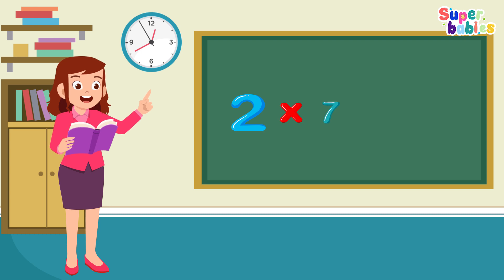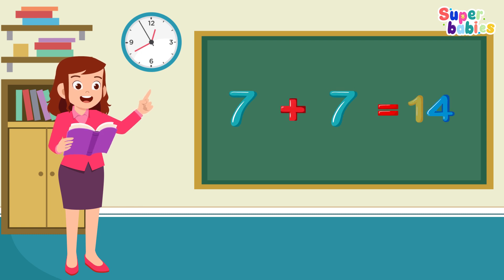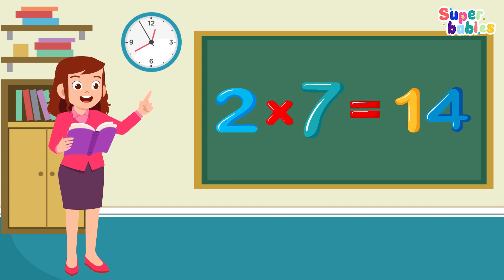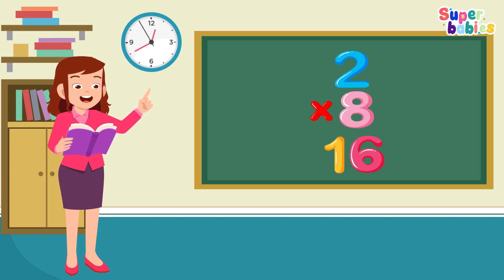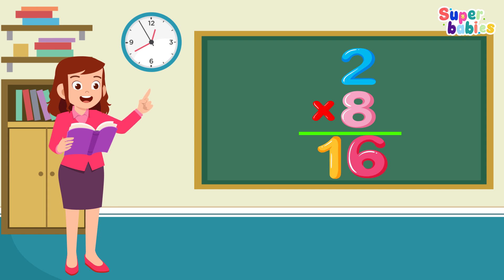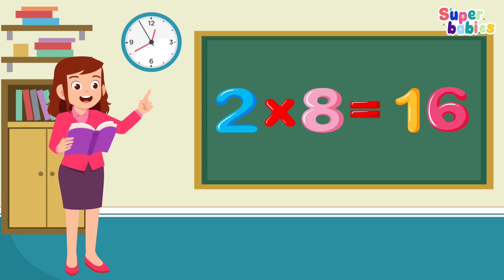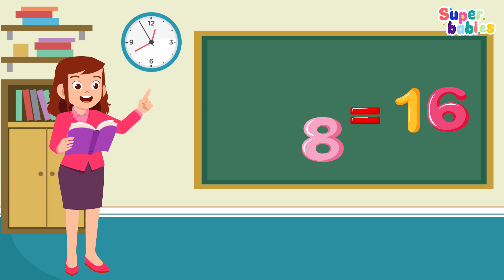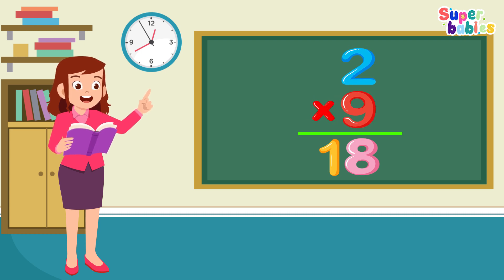Two times seven equals fourteen. Two, seven equals fourteen. One, two, seven equals fourteen. Two times seven equals fourteen. Two times eight equals sixteen. Two, eight equals sixteen. One, two, eight equals sixteen. Two times eight equals sixteen.